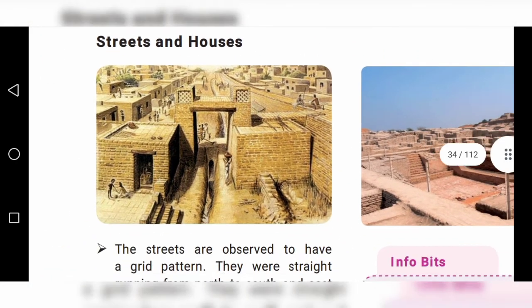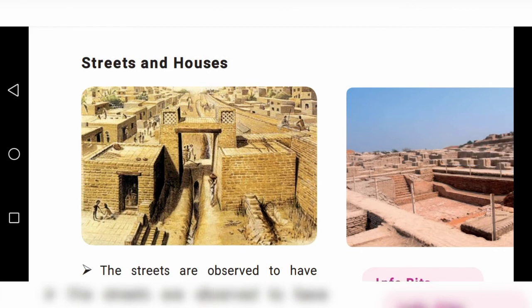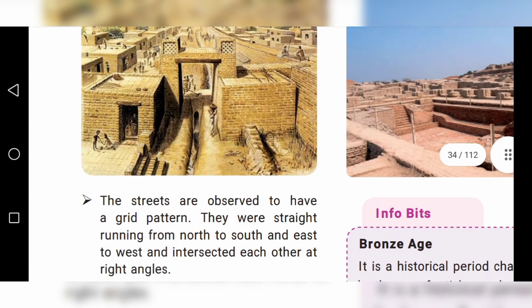Streets and Houses: The streets of the Indus Civilization are observed to have a grid pattern — grid means straight lines intersecting. The streets were straight, running from north to south and east to west, intersecting each other at right angles.